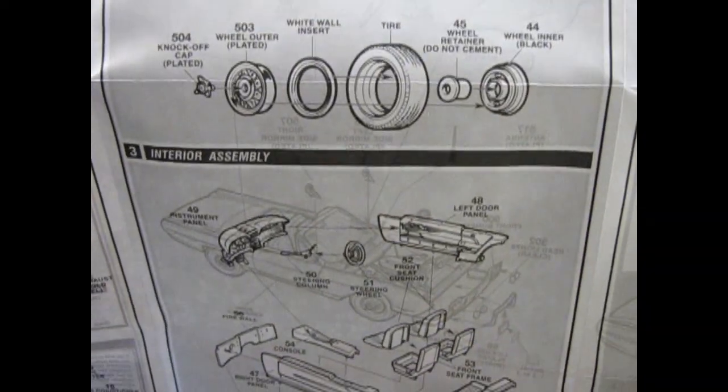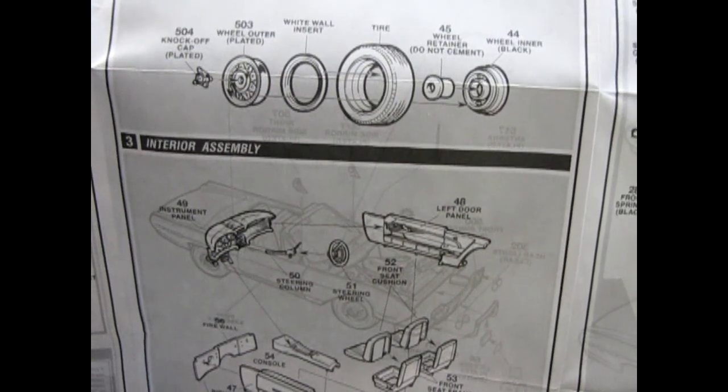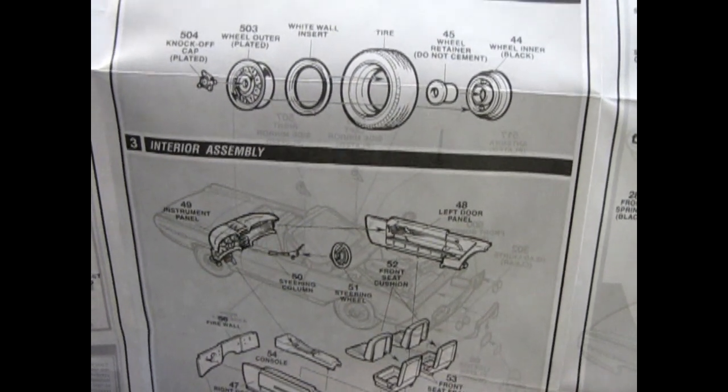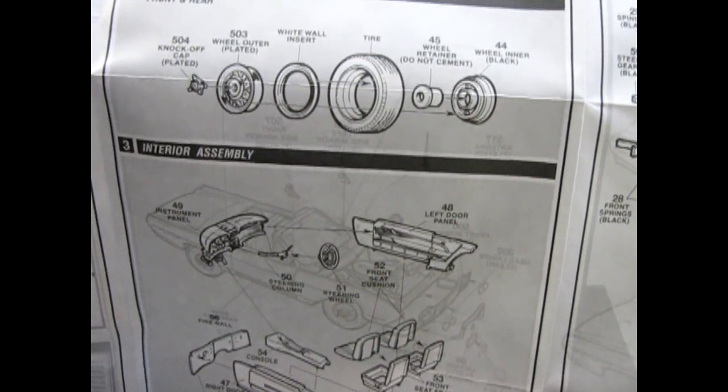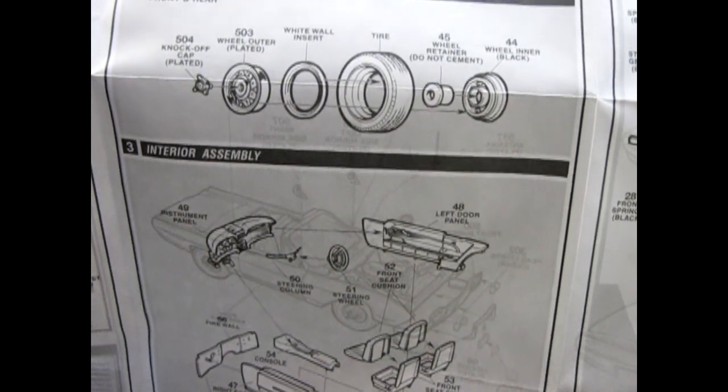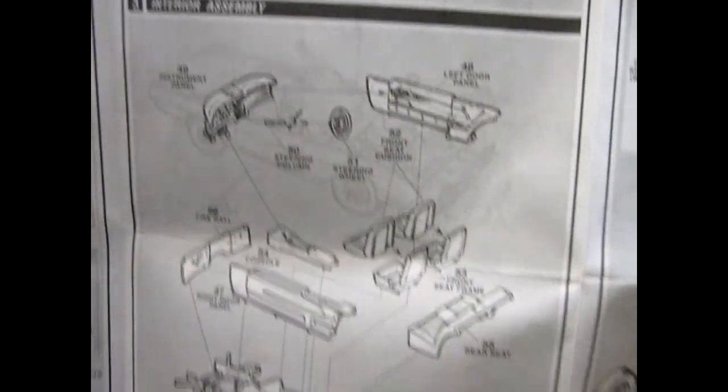Then it shows the multi-piece wheels. I mean, look at that. One, two, three, four, five, six pieces per wheel. Including the wheel back, the retainer, the tire, the white wall insert, the outer plated wheel, and the knockoff hubcaps. Very good stuff.